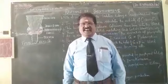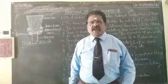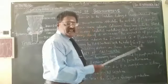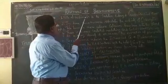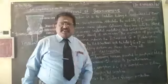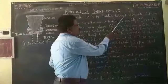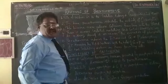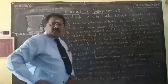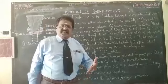The parathyroid gland secretes two types of hormones: parathormone and calcitonin. These two hormones have different functions. Parathormone acts on three important sites: the skeletal system, the gastrointestinal tract, and the kidney. In bones, parathormone stimulates the activity of osteocytes, which are the bone cells.